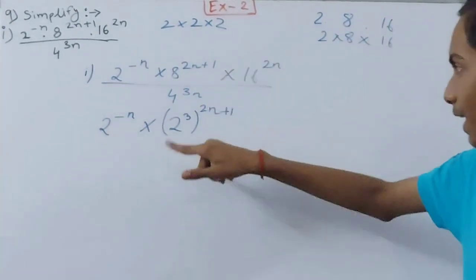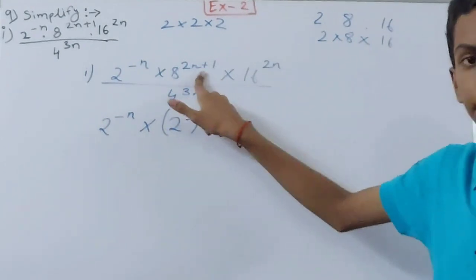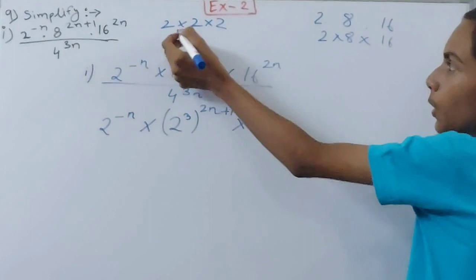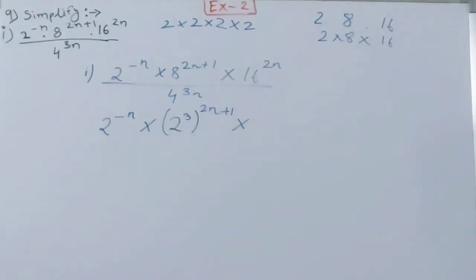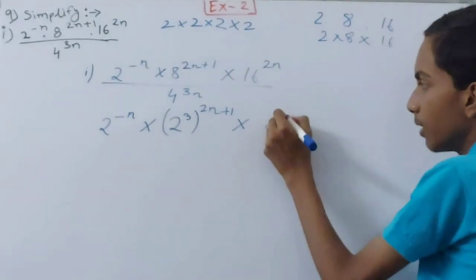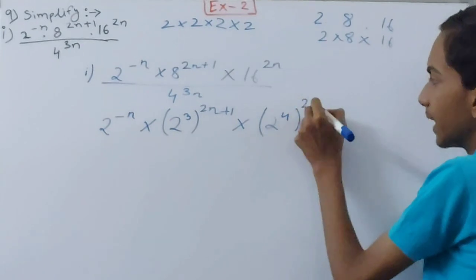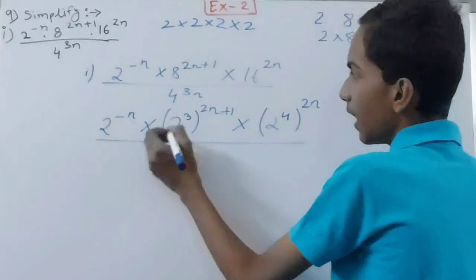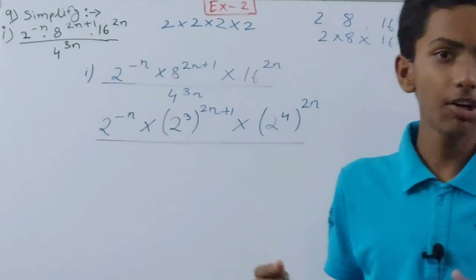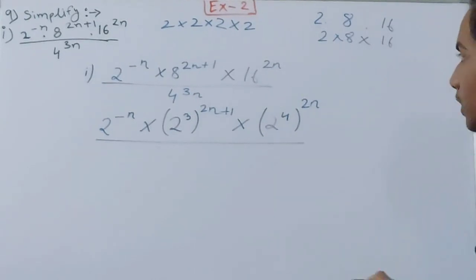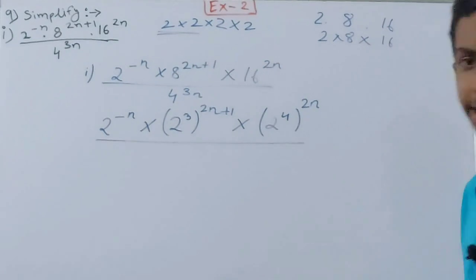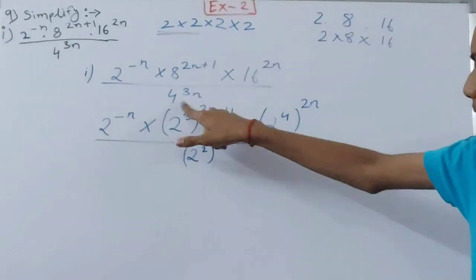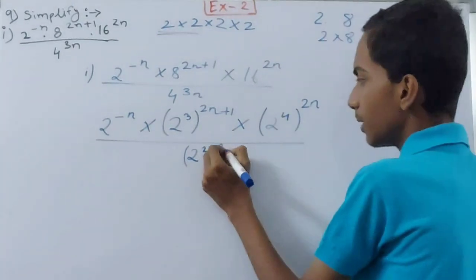The exponent (2n+1) stays as it is. Then 16 is 2×2×2×2, which is 2⁴, so 16 to the power 2n becomes 2⁴ whole to the power 2n. In the denominator, 4 to the power 3n is written as 2² whole to the power 3n, since 2×2 = 4.